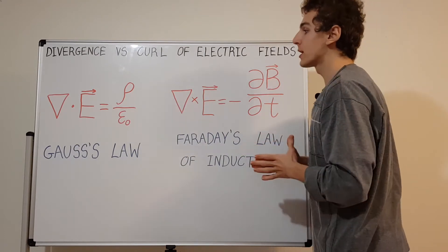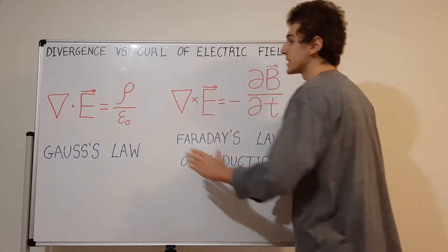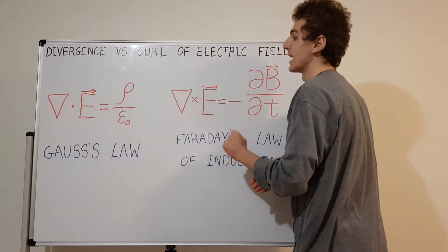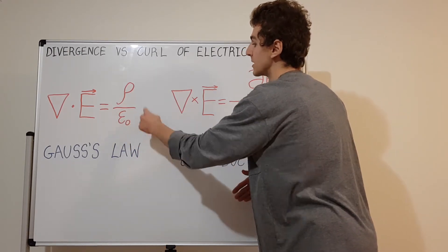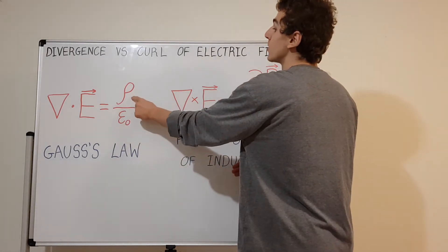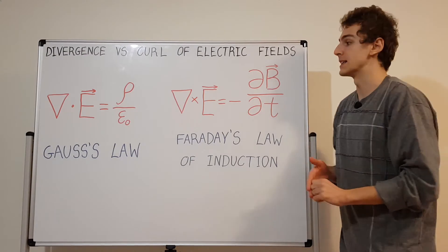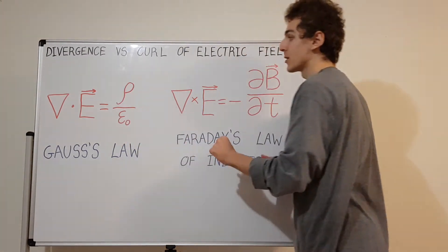Let's have a look at what Gauss's law says about the divergence of the electric field. On the right-hand side we have charge density rho and epsilon naught in the denominator. This is a constant, the permittivity of free space. This tells you the density of charge at every single point in space.